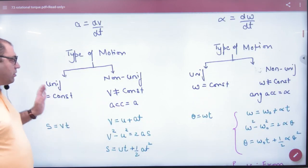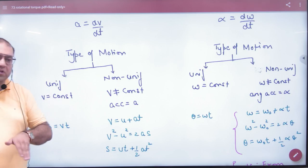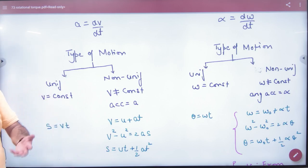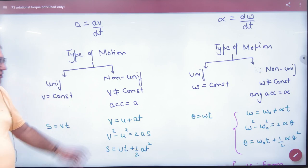Type of motion is uniform and non-uniform. In uniform motion, velocity is constant. Which equation of motion is applicable? S equals vt. Non-uniform motion is change in velocity, so there is acceleration in the system.